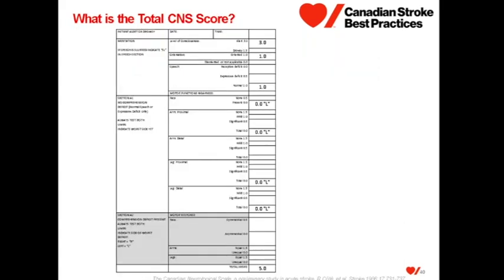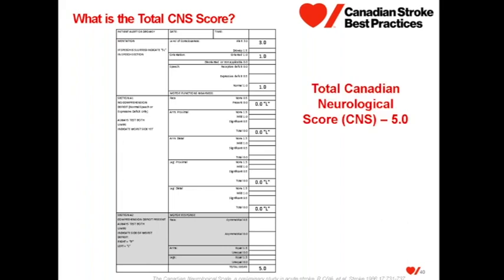Looking at the total Canadian Neurological Scale score for our patient: they received 5 on mentation — 3 for alert, 1 for orientation, 1 for normal speech — but had facial weakness, total weakness in the proximal and distal arms, and total weakness in the proximal and distal legs. The patient's total Canadian Neurological Scale score is 5.